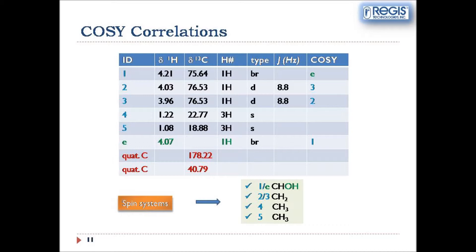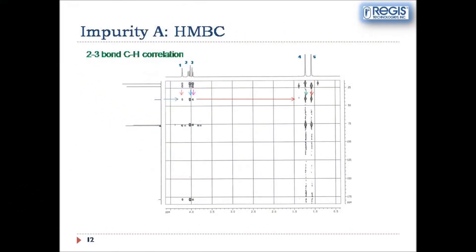This correlation exercise gives us information about the composition of the fragments, and we can reconstruct those fragments. The spin systems are presented on the bottom of the slide. We have two methyl groups, methylene groups, and an exchangeable proton connected to the oxygen and to a methane group. Now we have to think about how we can connect those spin systems.